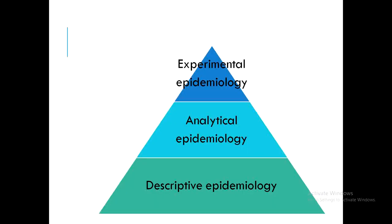Descriptive epidemiology forms the base of the pyramid of evidence generated in epidemiology. The researcher writes case reports, case series, conducts cross-sectional surveys and longitudinal studies, and is interested in time, place, and person distribution to generate hypotheses. Those hypotheses are then analyzed in analytical epidemiology through case control studies and cohort studies.